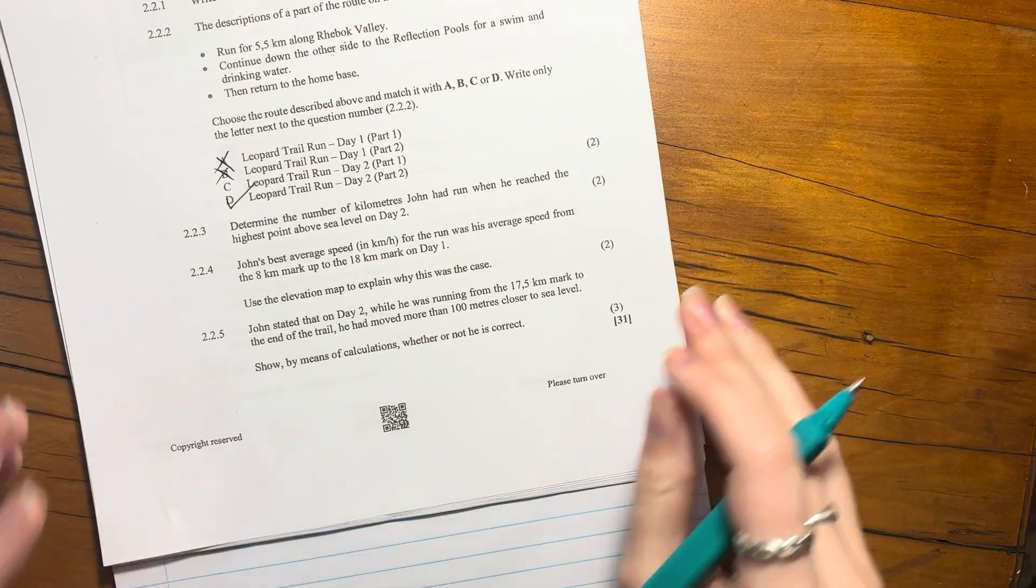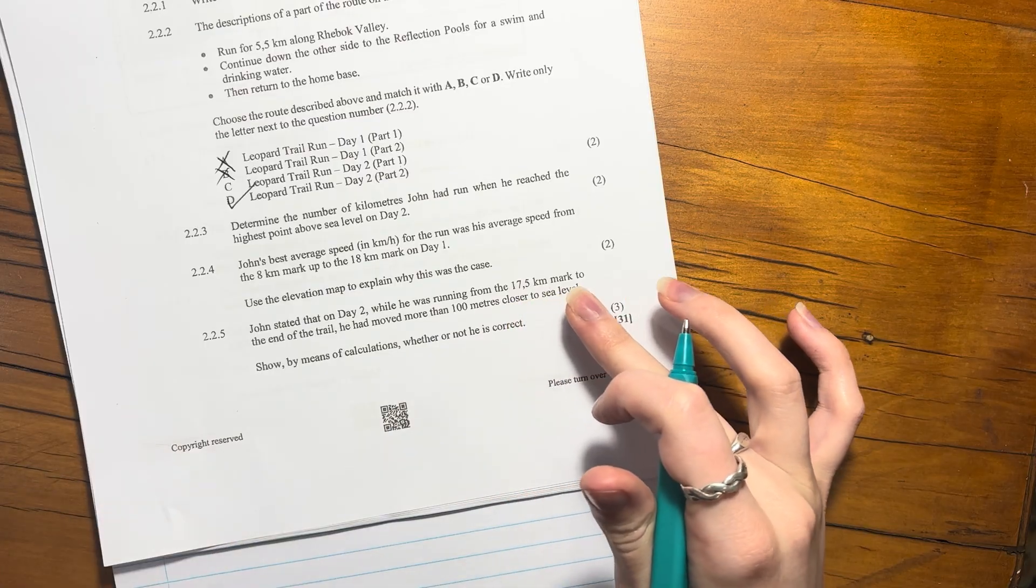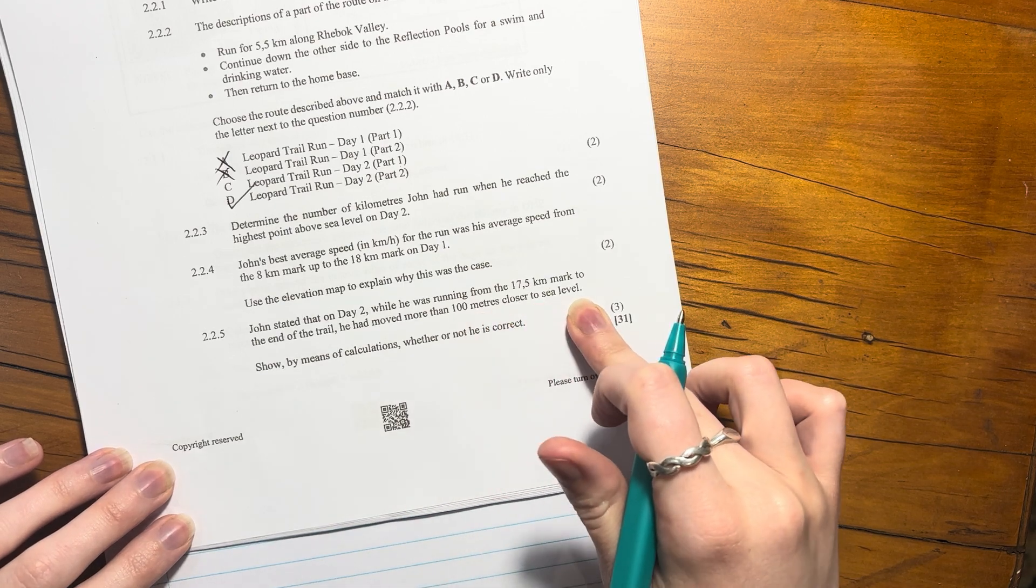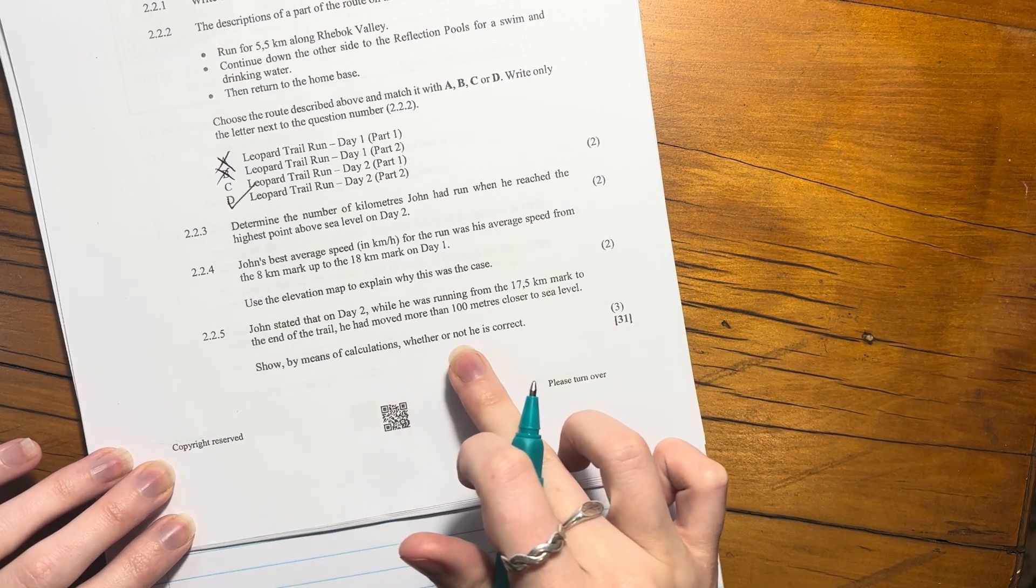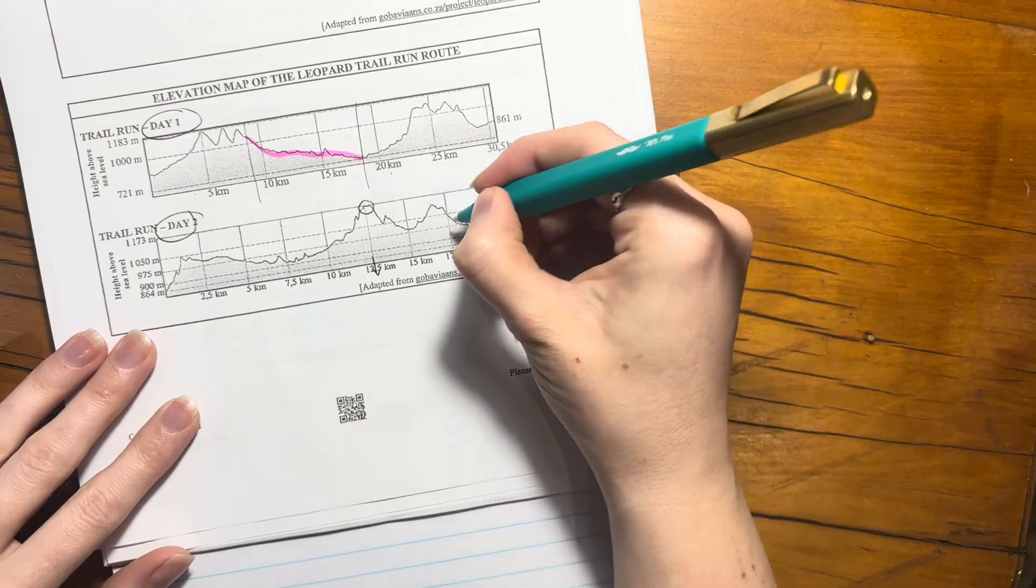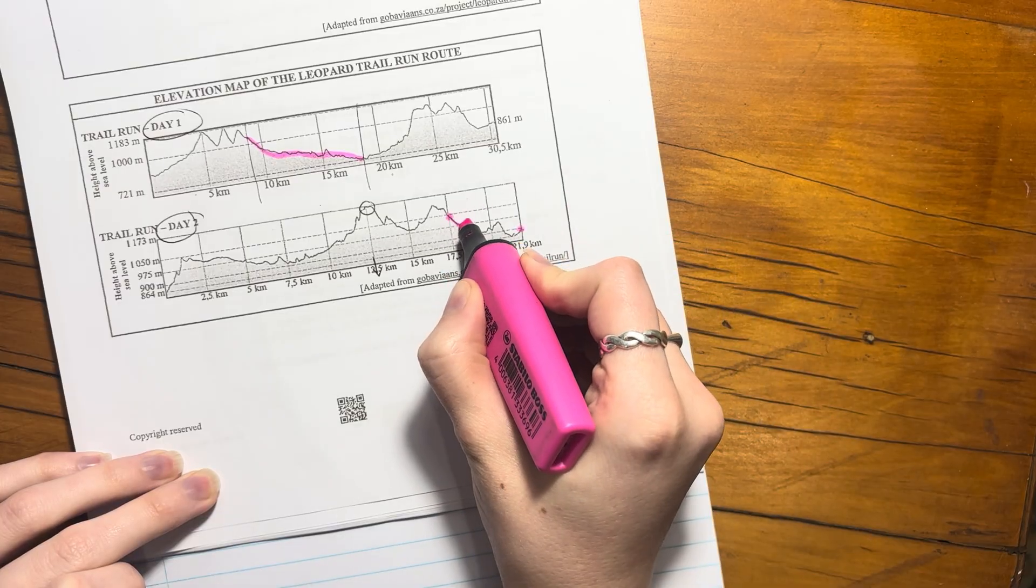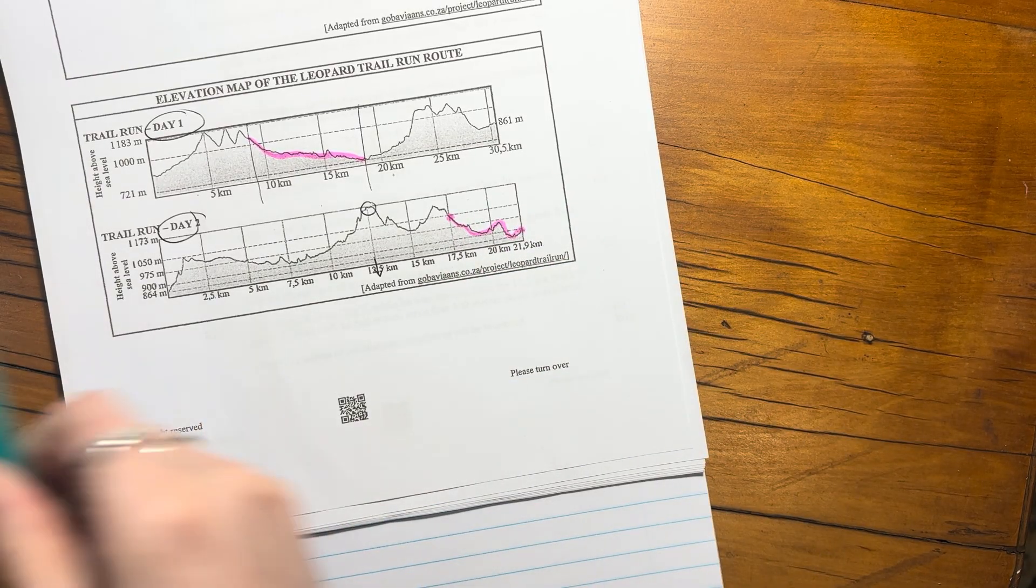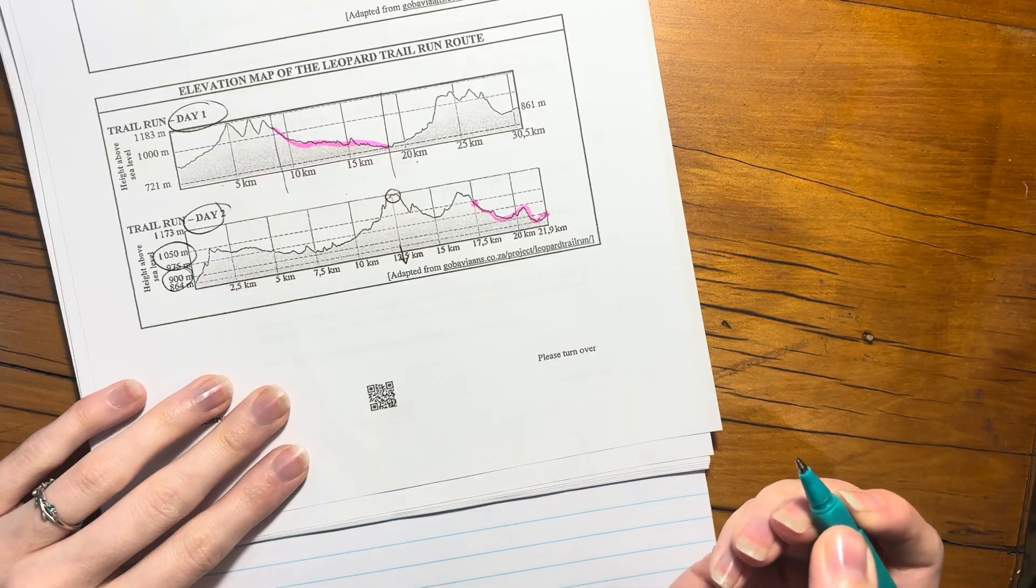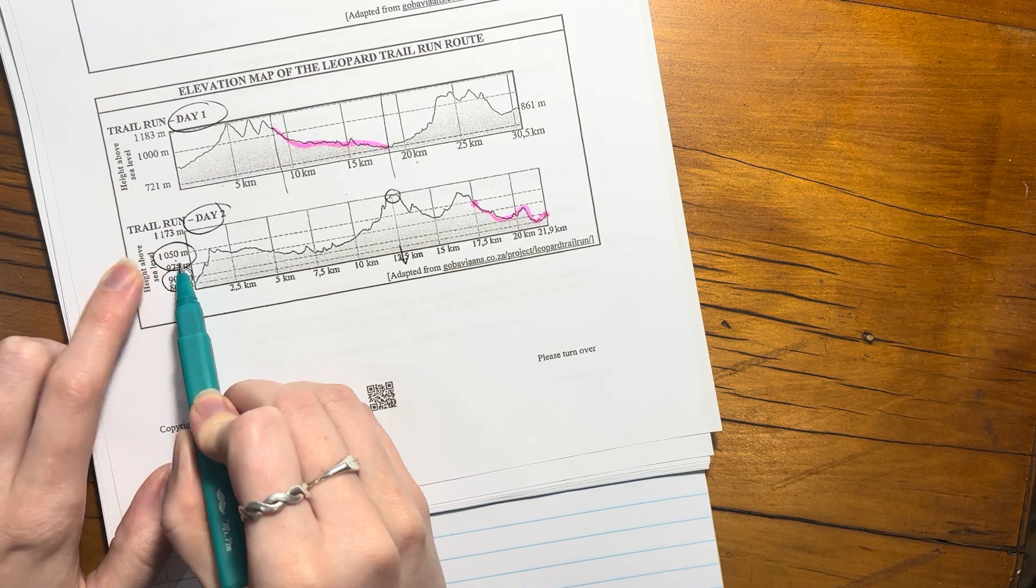Let's do the last question here. John stated that on day two, while he was running from the 17.5 kilometer mark to the end of the trail, he had moved more than 100 meters closer to sea level. Show by means of calculation whether or not he is correct. We're on day two. It said from 17.5, so he's over here to the end, so he's running there. At 17.5 his elevation was that, and at the end it was 900.